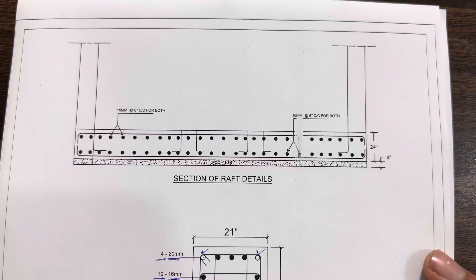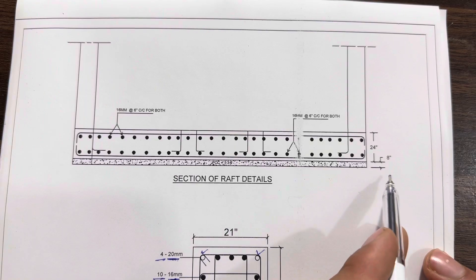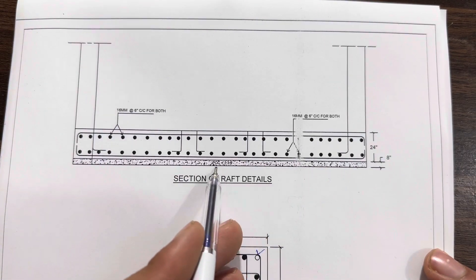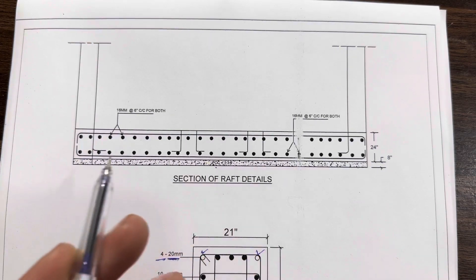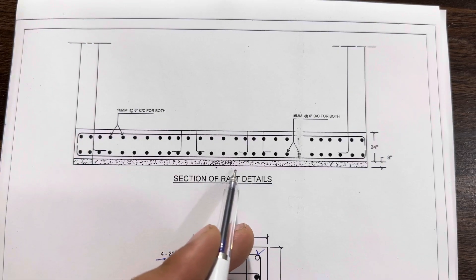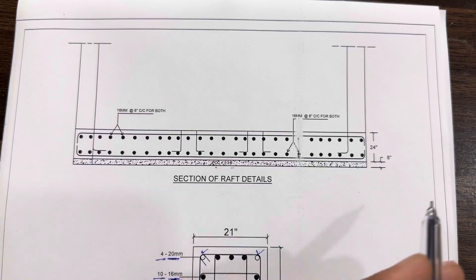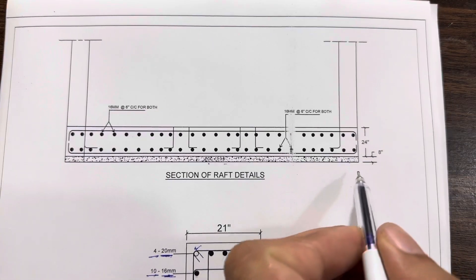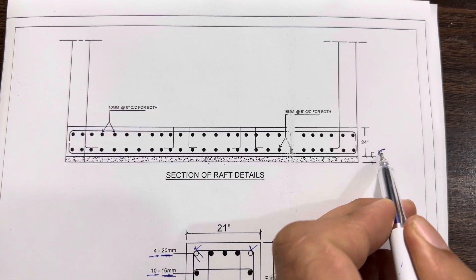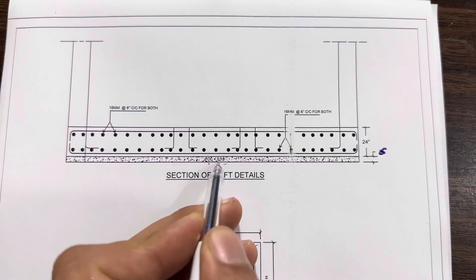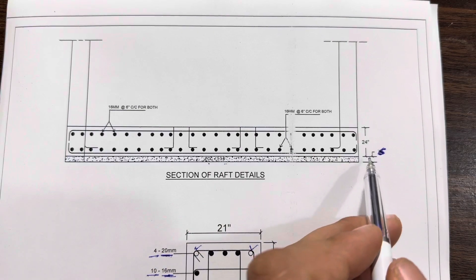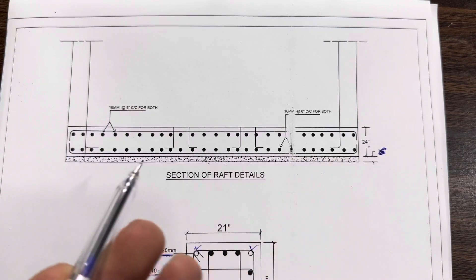Now let me guide you for section of raft foundation. You can see the total depth of the bed. First we did PCC with the ratio of 1:3:6, or 1:4:8 you can also use, but I did 1:3:8 because the leveling was not okay. Therefore we have six inches lean concrete. You can see this is lean concrete on the top of this, the bed depth is 14 inches. We have double mesh here.